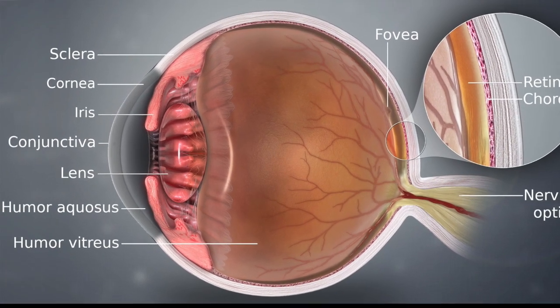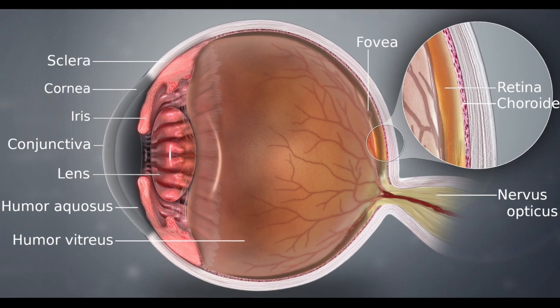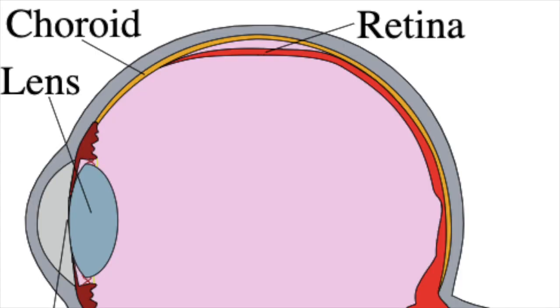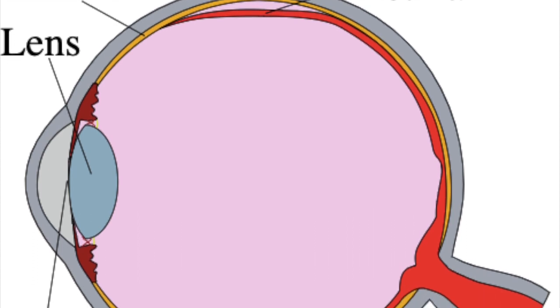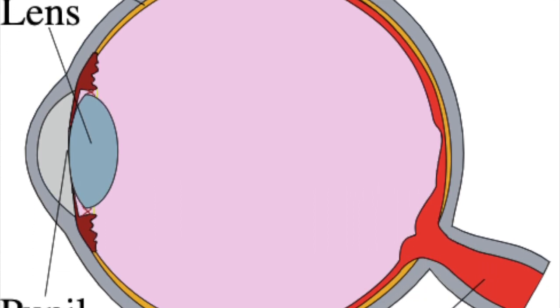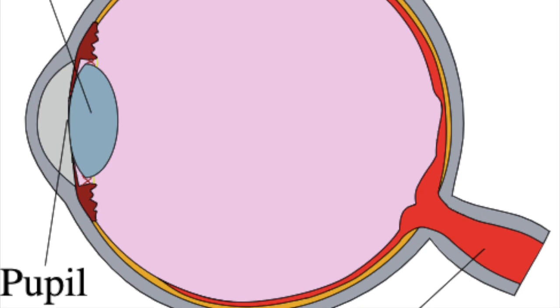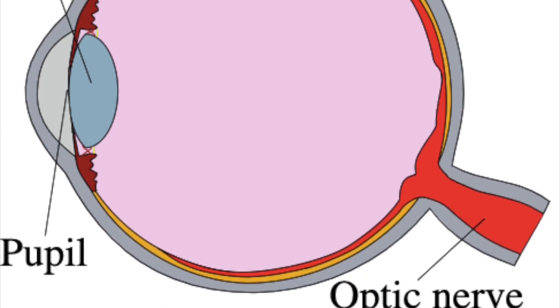The retina is a light-sensitive inner lining at the back of the eye. The different layers of cells work together in the retina to detect light and turn it into electrical impulses.